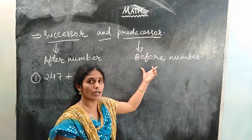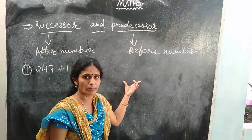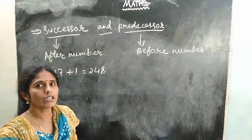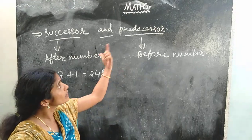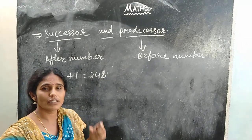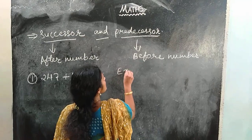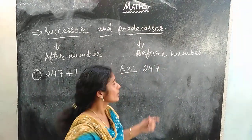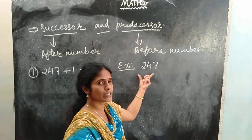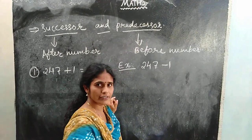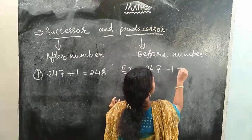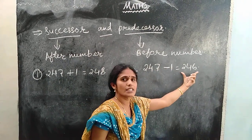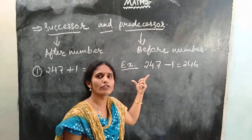Another one is predecessor, or preceding number, or before number. How do we get the predecessor? By subtracting 1 from the given number we get the predecessor. For example, the same number 247 — we subtract 1, so the answer is 246. So 246 is the predecessor of 247.